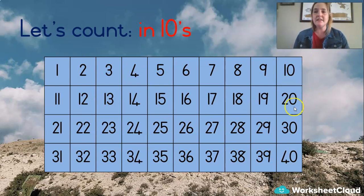10, 20, 30, 40. And backwards. 40, 30, 20, 10. Yay, very nice.